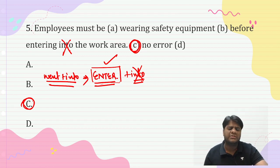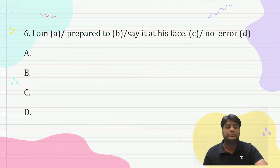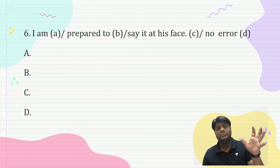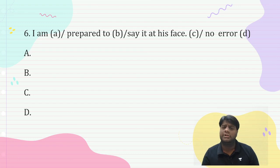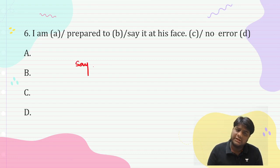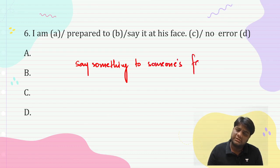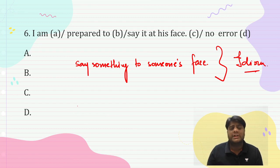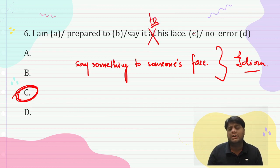'I am prepared to say it at his face.' Students, short questions often trick people more than long ones because we don't analyze them carefully. 'Say something to someone's face' is a fixed idiom used as-is. So 'at' is wrong — 'to' should be used here. Answer is C part.